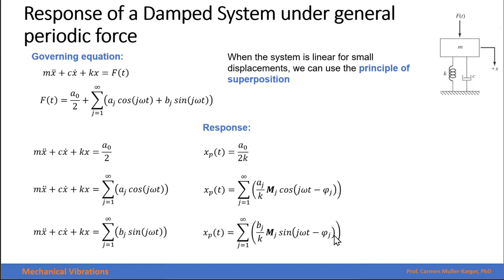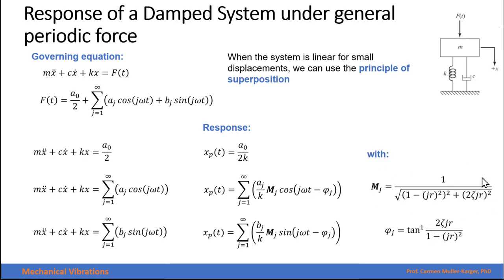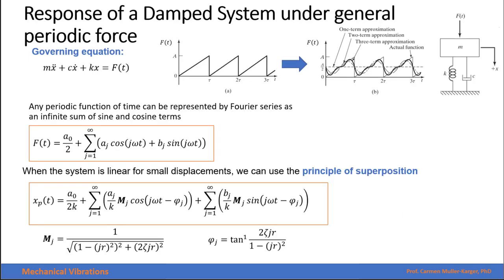For the third term, the response is similar to the previous one. In all cases, the magnification factor has the same form, and the phase angle has the same form. In conclusion, using the principle of superposition, if we convert our periodic function into a series of sine and cosine terms, our response is the sum of the individual responses to each of these harmonic forces.